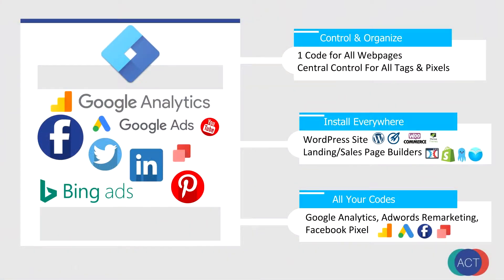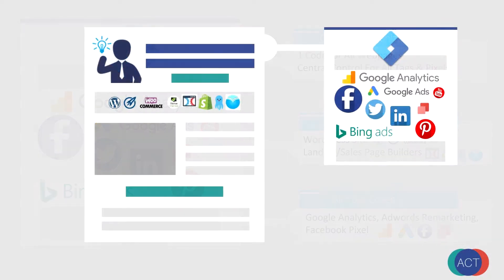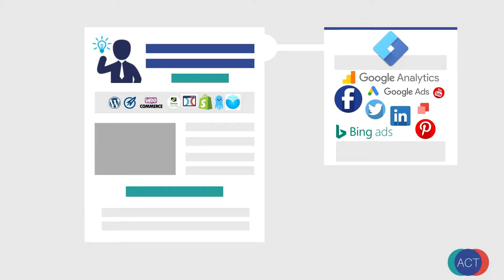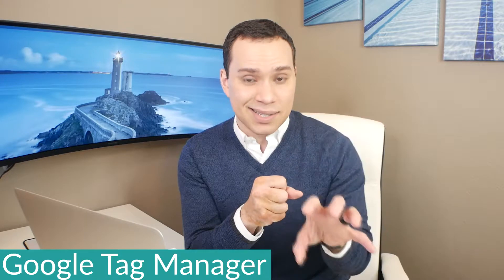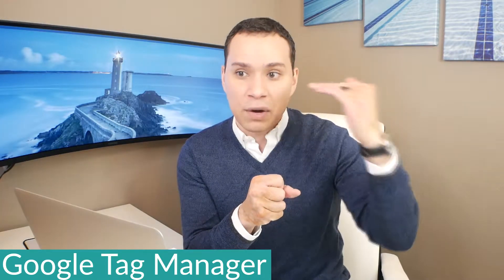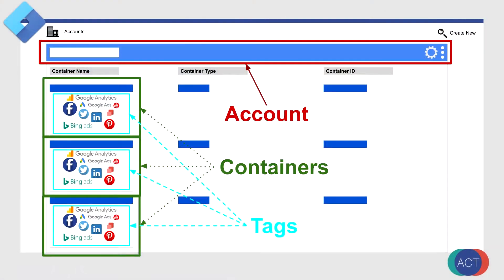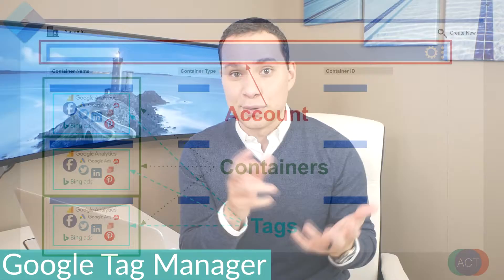When it comes to tracking in general, what isn't tracked can't be measured, and what isn't measured can't be improved. It's really hard to improve if your tracking is broken or if you have some code somewhere that you just don't know where it is. Because everything is inside of Tag Manager and there's a very detailed chain of updates and events, it's virtually impossible — pun intended — to lose your code.